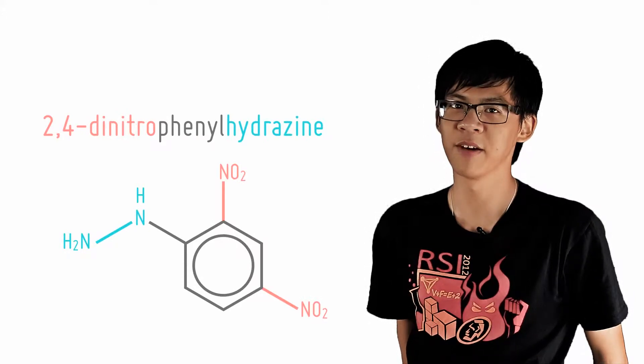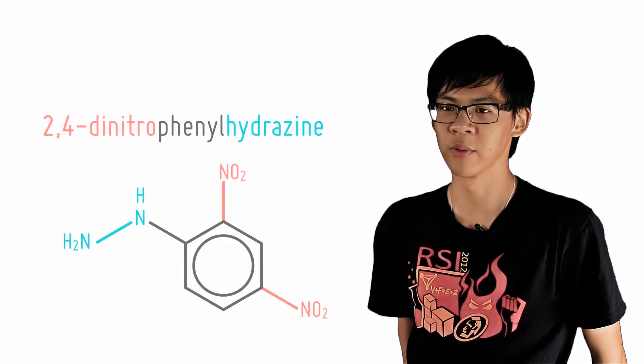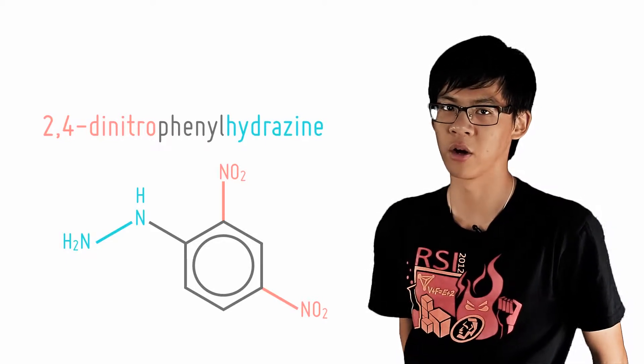The structure may look complicated, but for the purpose of the A-levels, please memorize it. You realize that it's actually simply just a benzene ring with two nitro groups attached and what we call a hydrazine group.